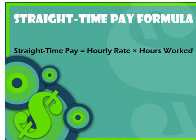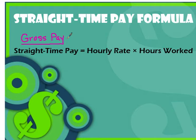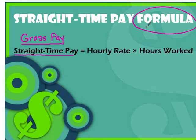Moving on to our formulas. The formula for straight time pay is simply your hourly rate — maybe $8.25, $10, or $30 an hour — multiplied by hours worked. Straight time pay is part of what's considered your gross pay. Gross pay is before anything is taken out: before they take out health care, taxes, or social security. We calculate straight time pay by taking hourly rate times hours worked. Write this formula in your notebook and pause if necessary.